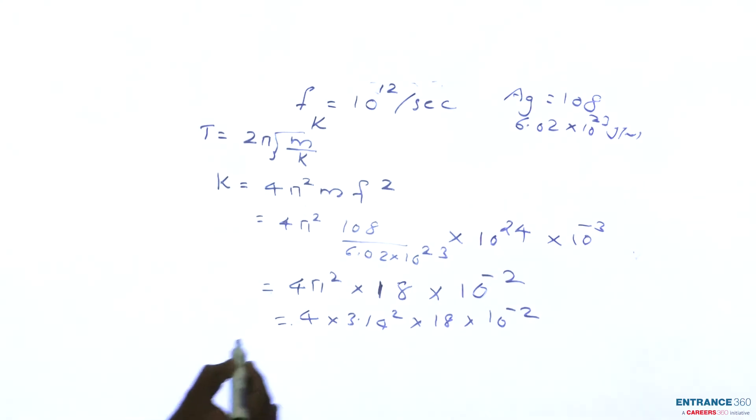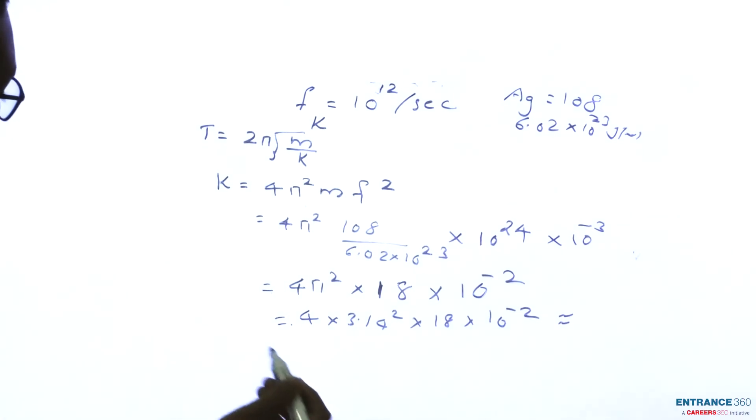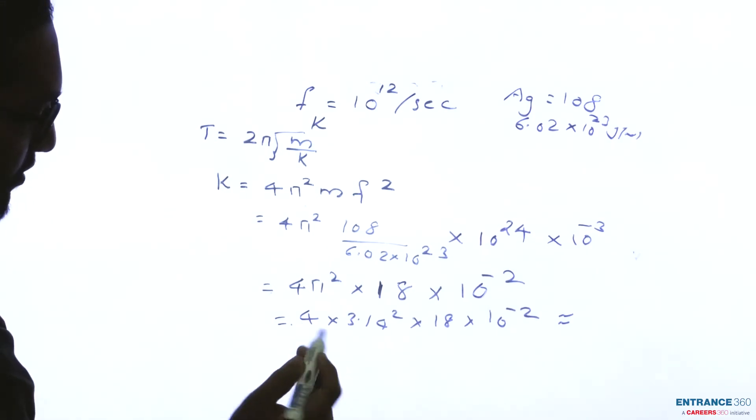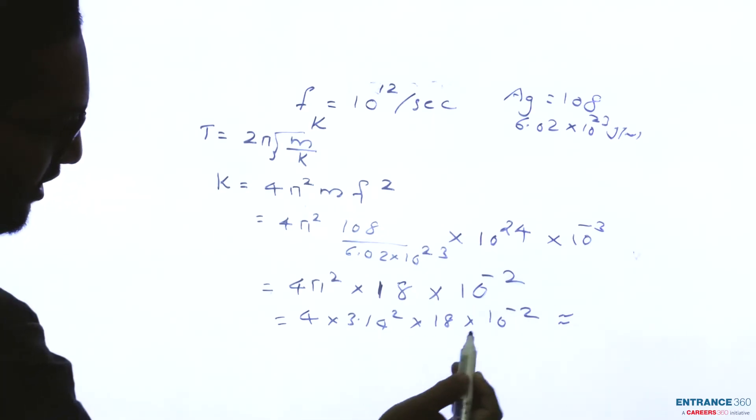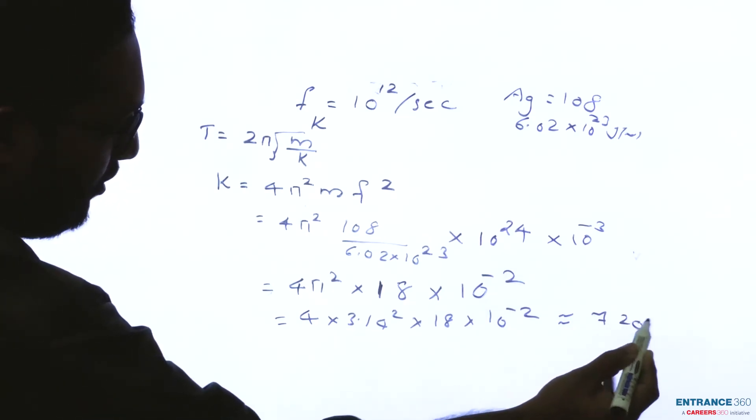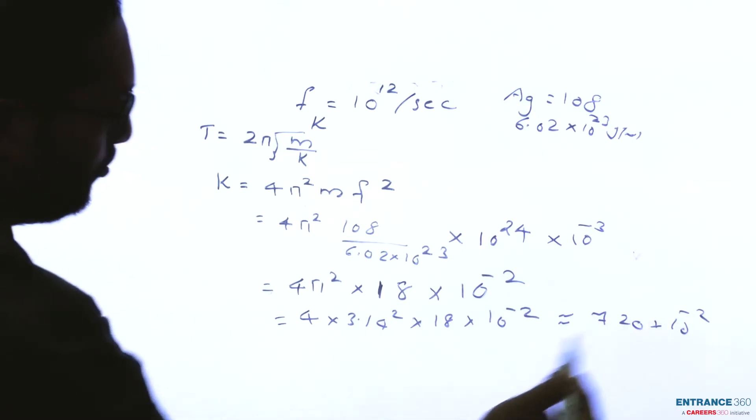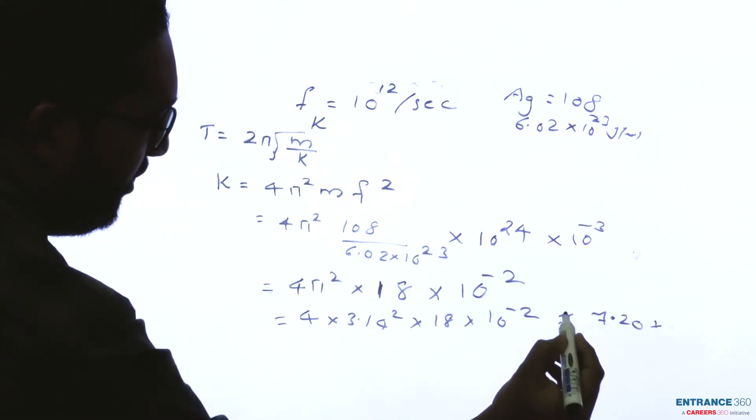Pi square we are approximating, we are finding approximate value because the range between options is different and large. So 4 into approximately we are taking as 10, 14 into 18 approximately it will be 720 into 10 raise to minus 2 which will be equal to approximate value is 7.2.